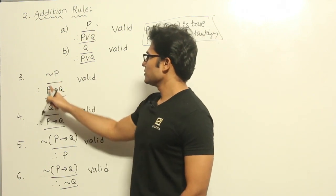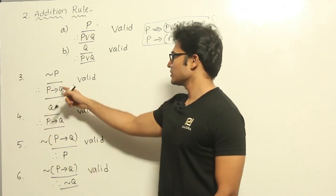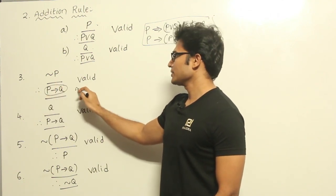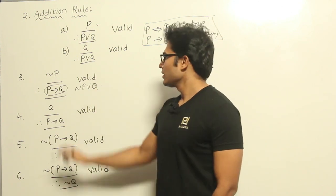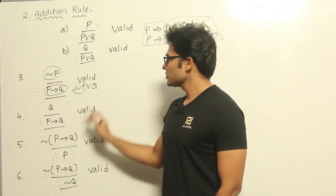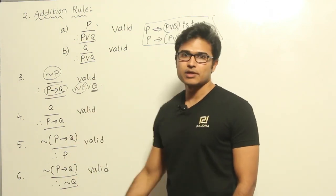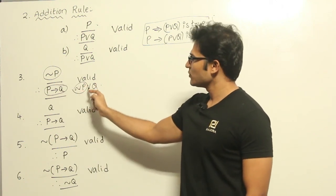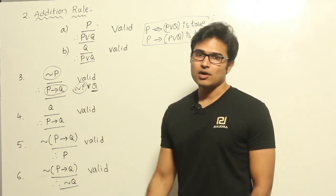The next rule: given ¬P and P→Q, we can write P→Q as ¬P∨Q. Since ¬P is already true, this part is true irrespective of the other part — it will always be true. So if this one is already known to be true, you can add anything to it with an OR and say the result is true. That is why it is a valid argument.